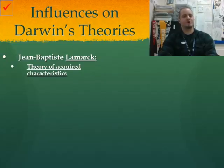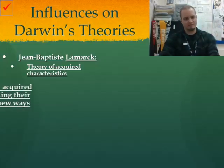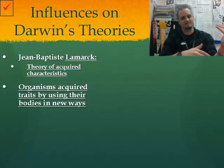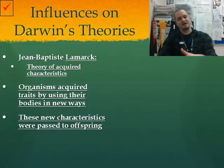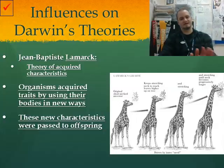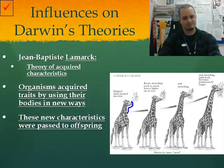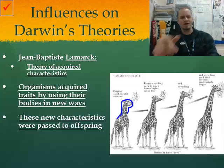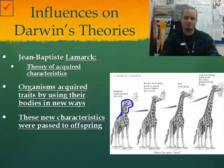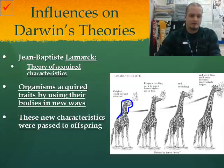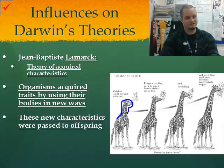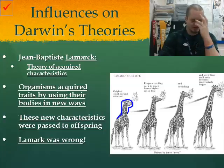Another scientist was Jean-Baptiste Lamarck, who had the theory of acquired characteristics — or as I like to call it, the Disney theory. His theory was that organisms acquired traits by using their bodies in new ways, and these characteristics were then passed on to offspring. For example, originally we had a very short, stubby-necked giraffe. The giraffe wanted to eat leaves high up on trees, so every day it stretched its neck as far as it could. Because it worked so hard, its offspring had longer necks, eventually leading to the giraffes we see today. That's why I call this the Disney theory — just by wishing and really giving it your all, you can change future generations.